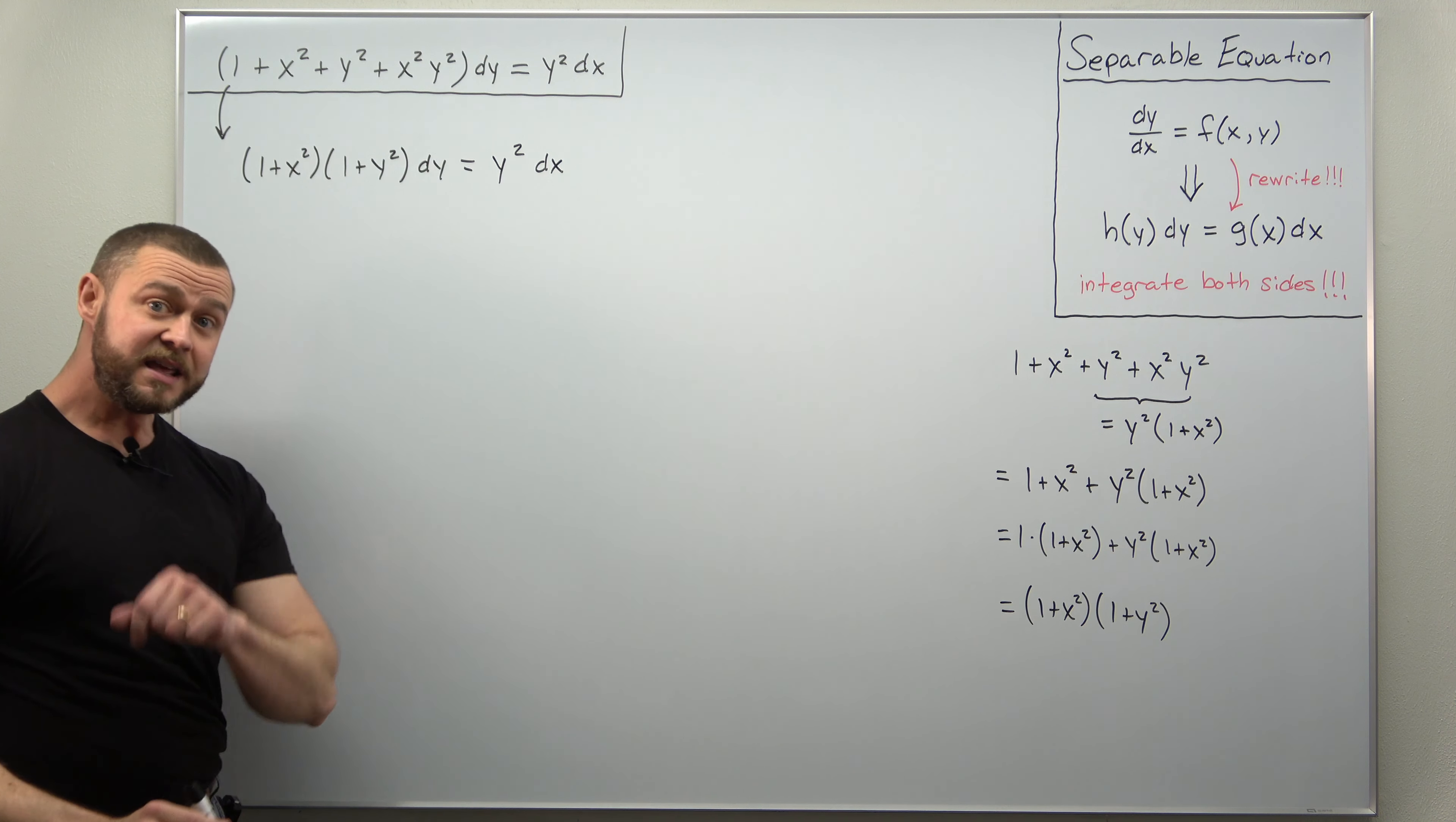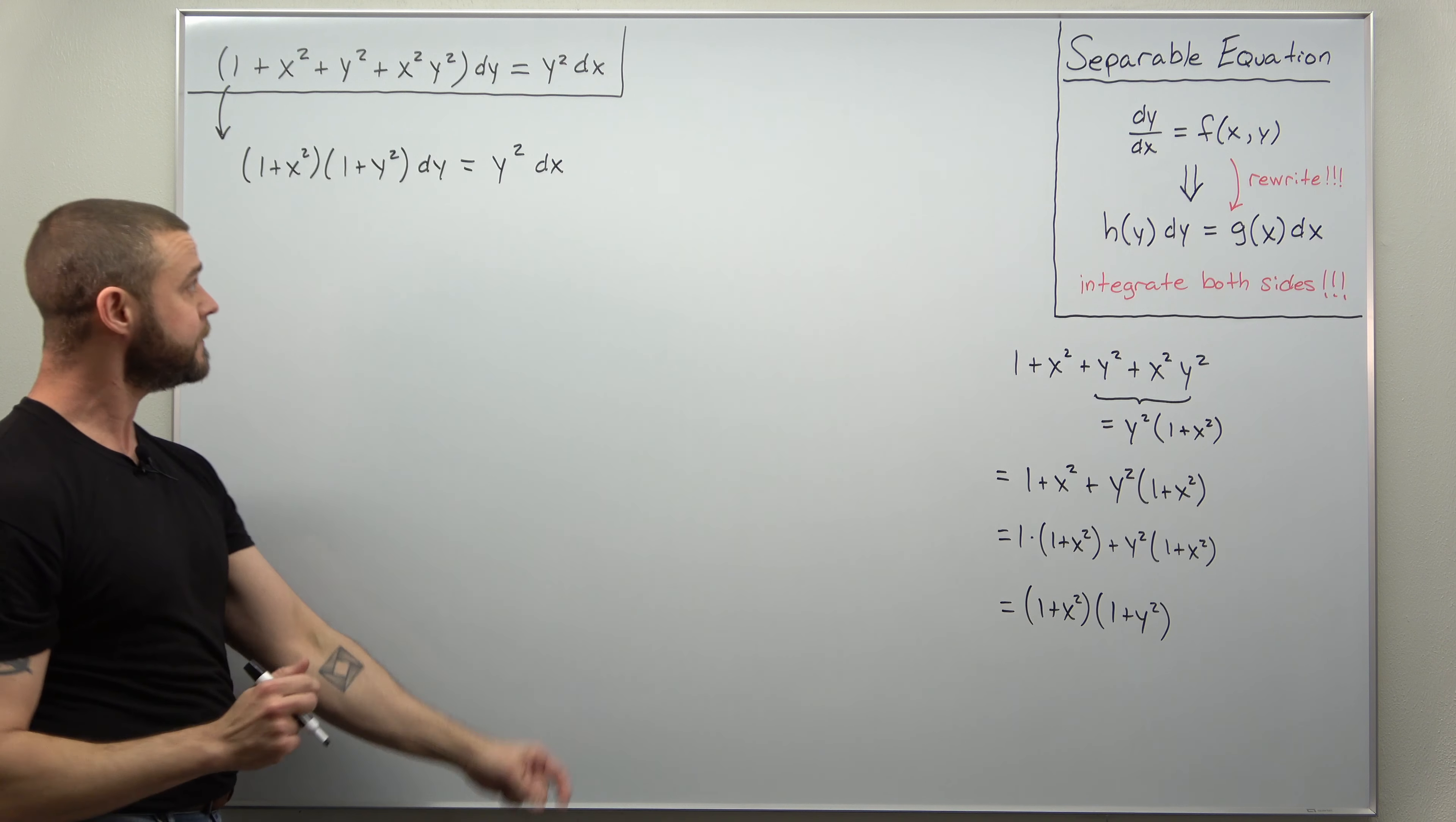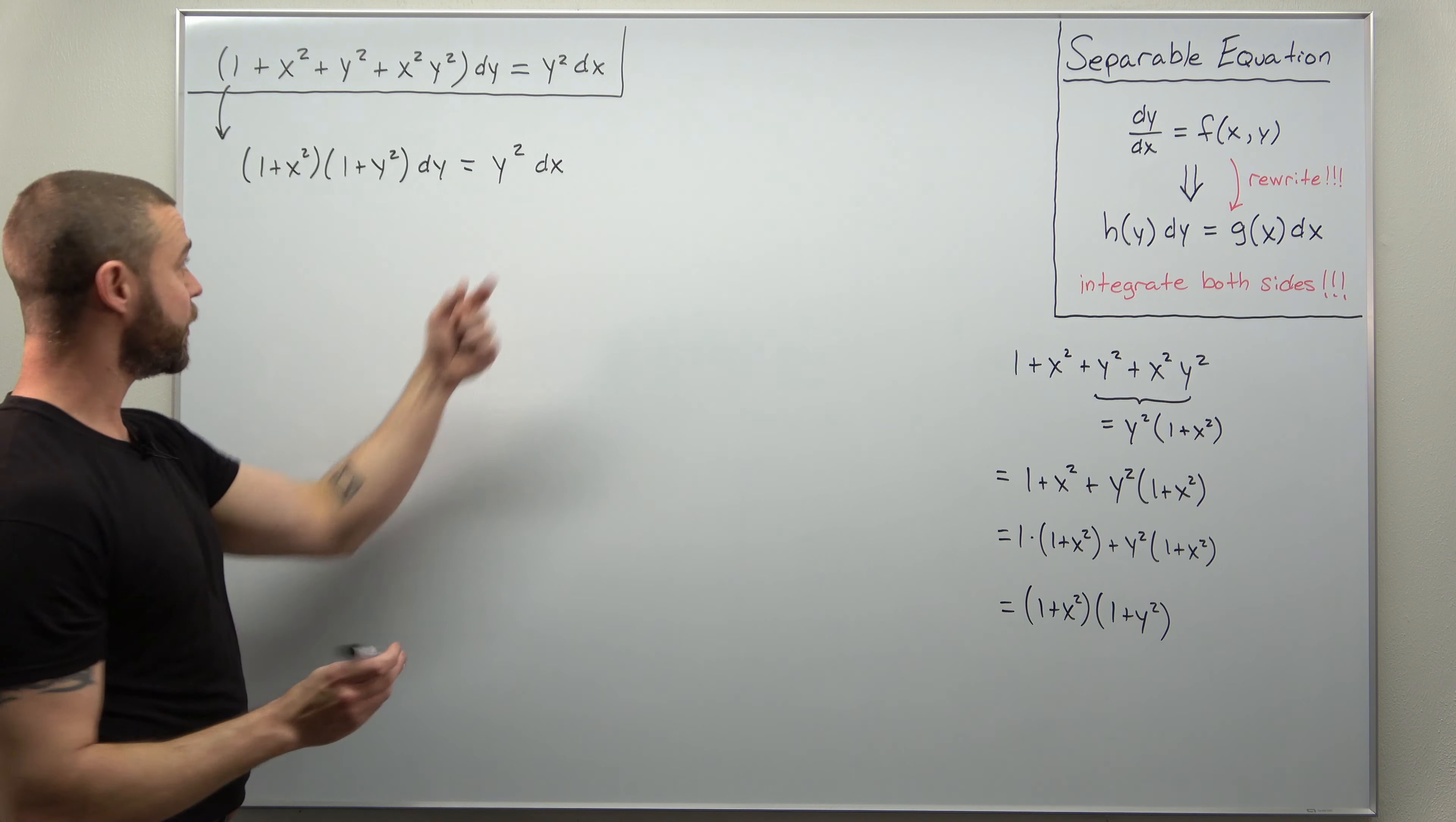All right, and from here we can easily separate. Just be careful, we have our dx and dy maybe on different sides than we're used to, but that's okay. Let me go ahead and divide the y squared over and I'll divide 1 plus x squared over.